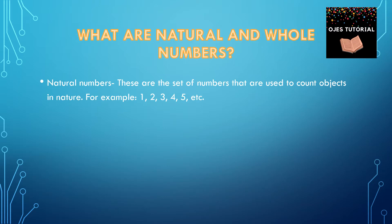So, natural numbers. These are the set of numbers that are used to count objects in nature. For example, 1, 2, 3, 4, 5, etc.